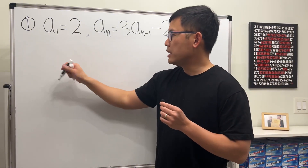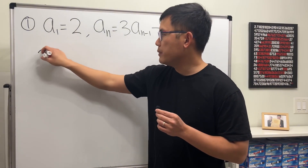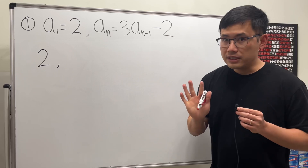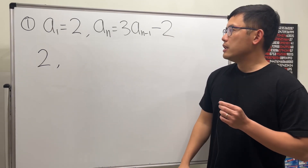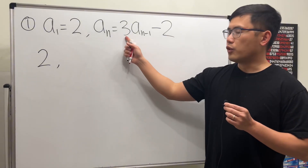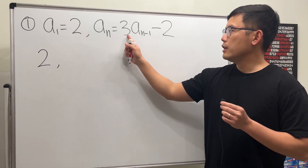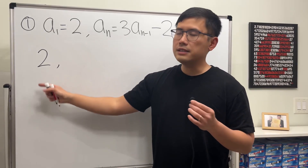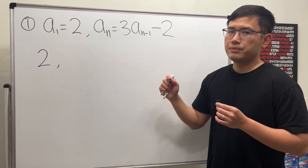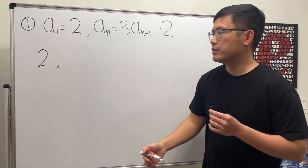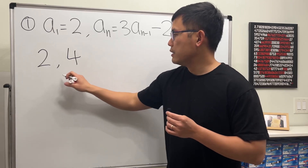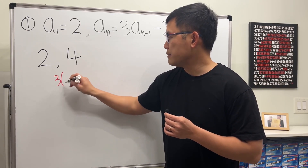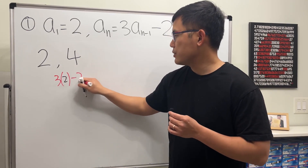To start, we begin with the first term, which is given to be 2, and let's list out five more terms after this. The formula says 3 times the previous: 3 times 2 is 6, and then minus 2, so 6 minus 2 is 4. So this is 3 times the previous minus 2.